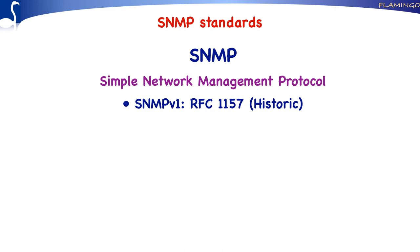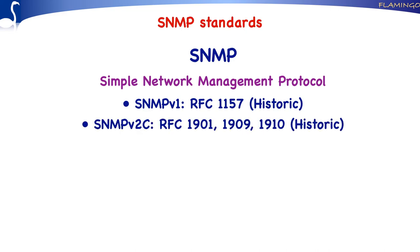The problems with SNMP version 1 are that its performance is relatively poor, and its security mechanism, which relies on community strings — essentially passwords — is relatively weak. These community strings are transported over the network in an unencrypted way. For that reason, the IETF started in the early 90s to work on a second version of SNMP, SNMP version 2.